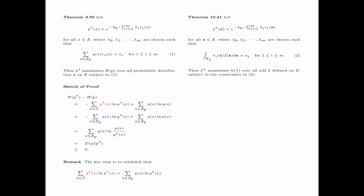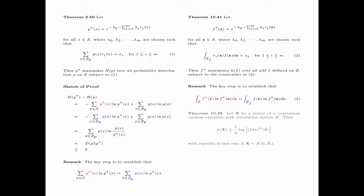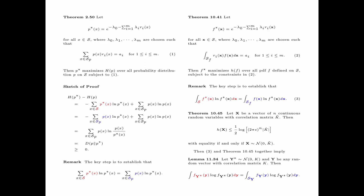Theorem 10.41, which is the continuous version and also the vector generalization of Theorem 2.50, says that the PDF F star maximizes the differential entropy H(F) over all PDFs F defined on support S, subject to the constraints in equation two. The key step is to establish that the integral of F star(x) log F star(x) dx over the support equals the corresponding integral with F. We also recall Theorem 10.45, which says that for a given correlation matrix K tilde, the zero mean Gaussian vector maximizes the differential entropy. In light of Theorem 10.45, Lemma 11.34 is actually a special case of equation three.